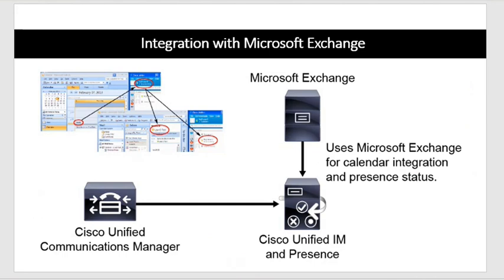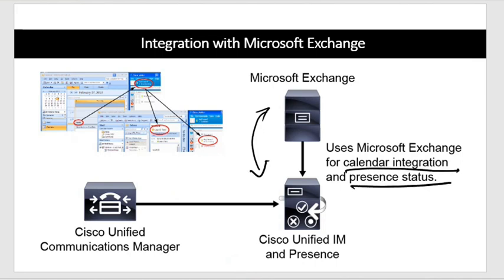Integration with Microsoft Exchange: Exchange is used for calendar information and integration with Outlook. If you have meetings in Outlook, Jabber can take that information and show it in the chat. CUCM and the IM&P server integrate with Exchange; Microsoft Exchange is used for calendar information and presence status.